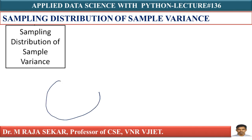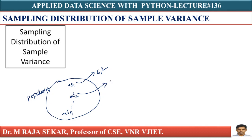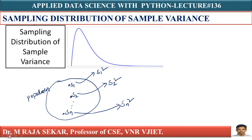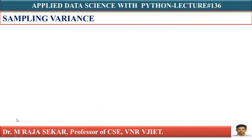If I have a population, and in this population I have samples S1, S2, up to N samples, and I take the variance of each sample — S1 squared, S2 squared, up to SN squared — if I plot these variances, I will get a particular shape curve. This is known as the chi-square distribution curve.